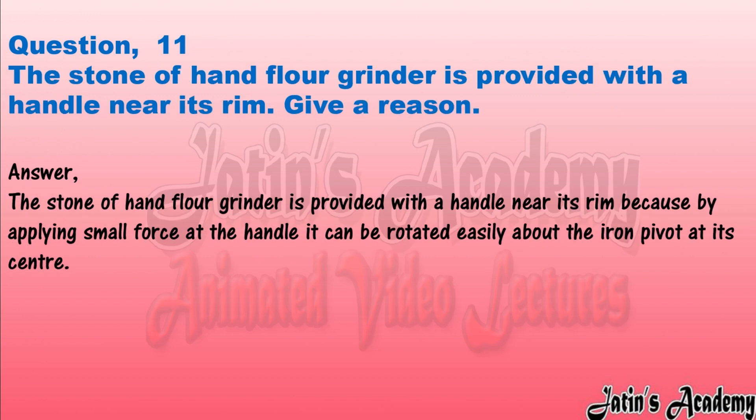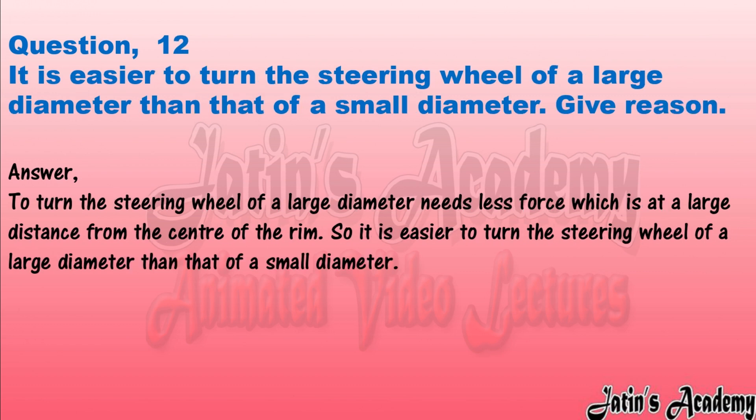Question eleven: the stone of a hand flour grinder is provided with a handle near its rim. Give a reason. Answer: the stone of a hand flour grinder is provided with a handle near its rim because by applying small force at the handle it can be rotated easily about the iron pivot at its center.